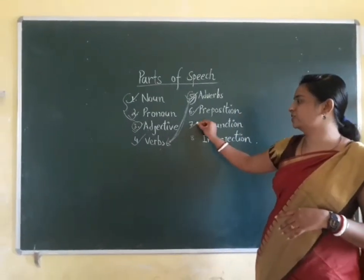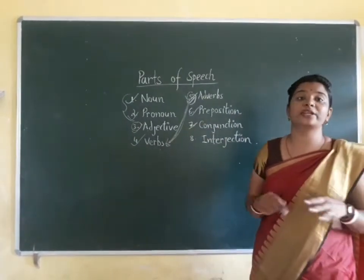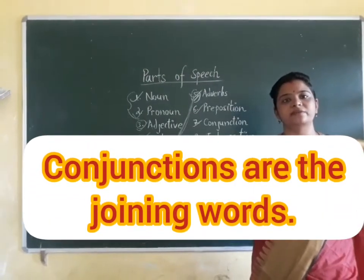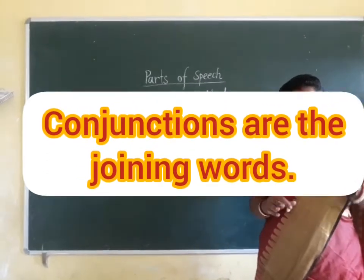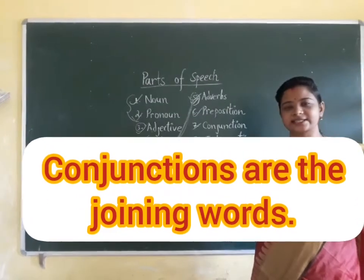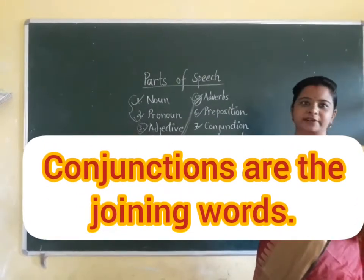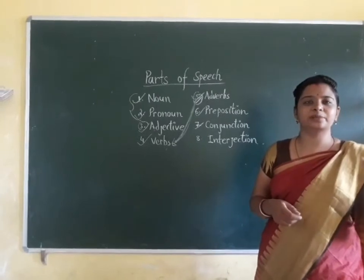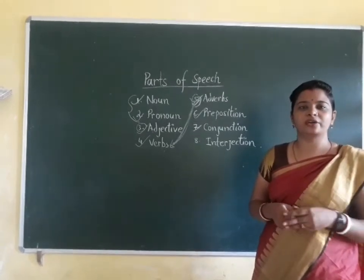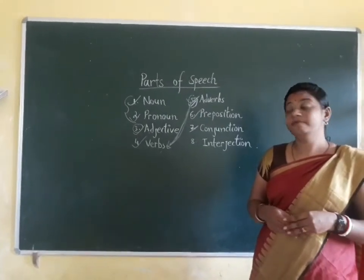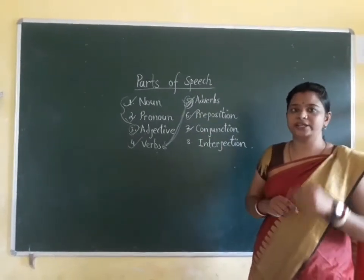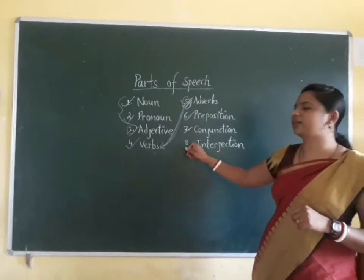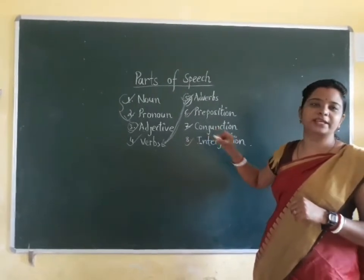Coming to conjunctions — they are the joining words. Conjunctions can join two words, two sentences, or phrases. Examples include: and, but, or. So conjunctions are the joining words.